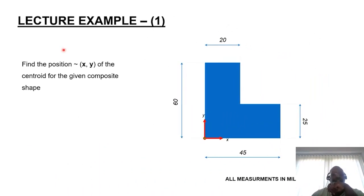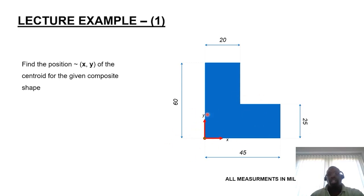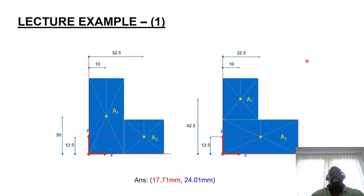Let's look at a quick example — this is the first lecture example. We've been given this composite shape along with some dimensions and information about where the global reference axis is located. We need to work out the central position of this form with respect to where the global axis has been presented. There are varieties of ways to decompose a composite form. In the first example, it's been segmented to give two distinct areas that define its regular constitution.